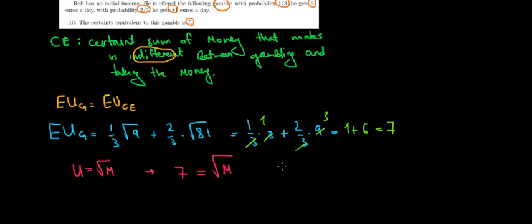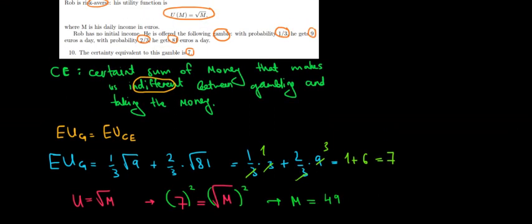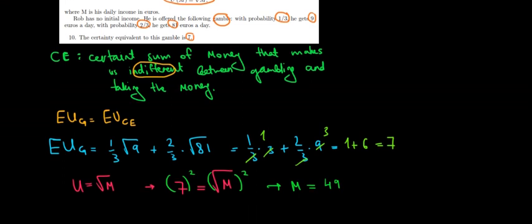And that amount would be... Well, if we take both to the power of 2 to get rid of the square root on the right side, it would be 49. So if we have 49 for sure, we would have the same utility of 7 units. And that would be also the utility under the gamble. So 49 euros for sure would be the certainty equivalent in this case.